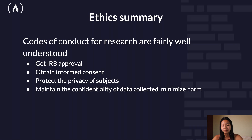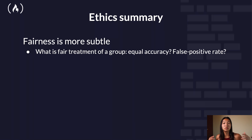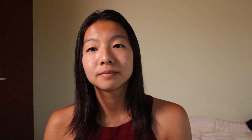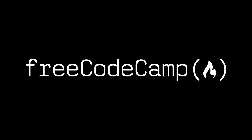In summary, the codes of conduct for research are fairly well understood, but do we always follow them? That line gets a little bit gray sometimes. And fairness is more subtle — what is fair treatment of a group? Is it judged by equal accuracy, or equal false positive rate? The key technical aspects to take away from this talk are: differential privacy, which bounds the amount of information to be revealed; data provenance, which means you can track how you've modeled your algorithms; and the tradeoff between optimizing outcomes versus avoiding discrimination against a group. Thank you for listening to this talk, and a big shout out to OpenDS for All for providing these materials. See you next time.